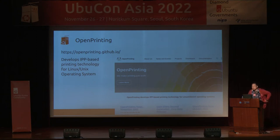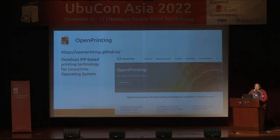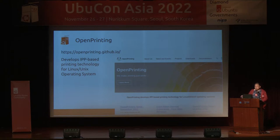OpenPrinting is developing IPP-based printing technology for Unix. This organization plays a very important role in developing printing features for the Linux world. There are also other organizations with important roles, which I will mention later.